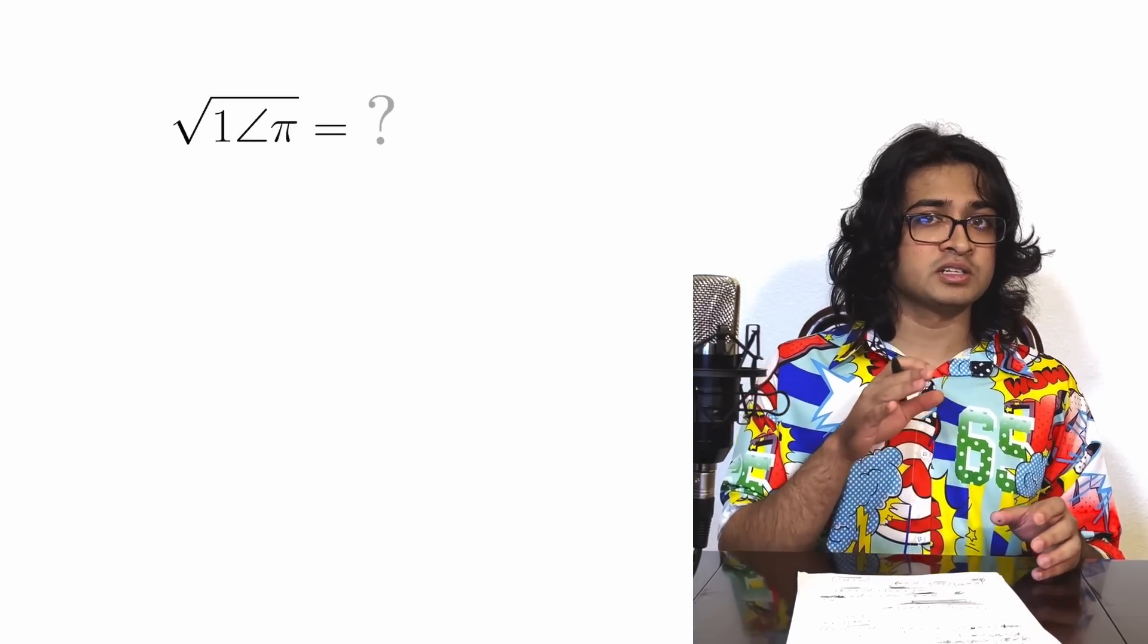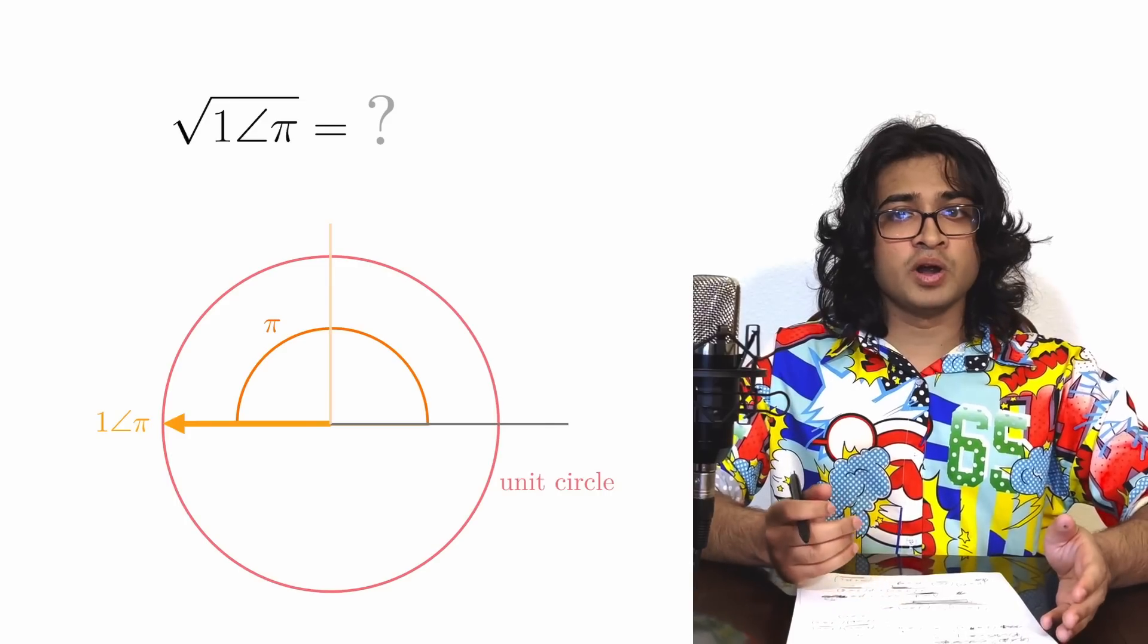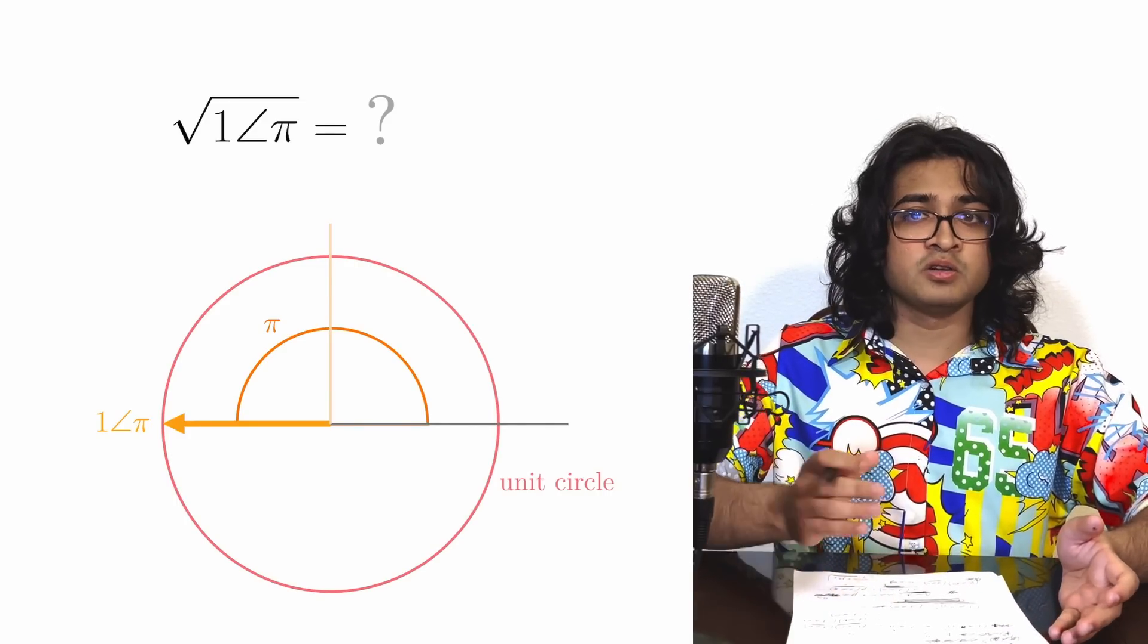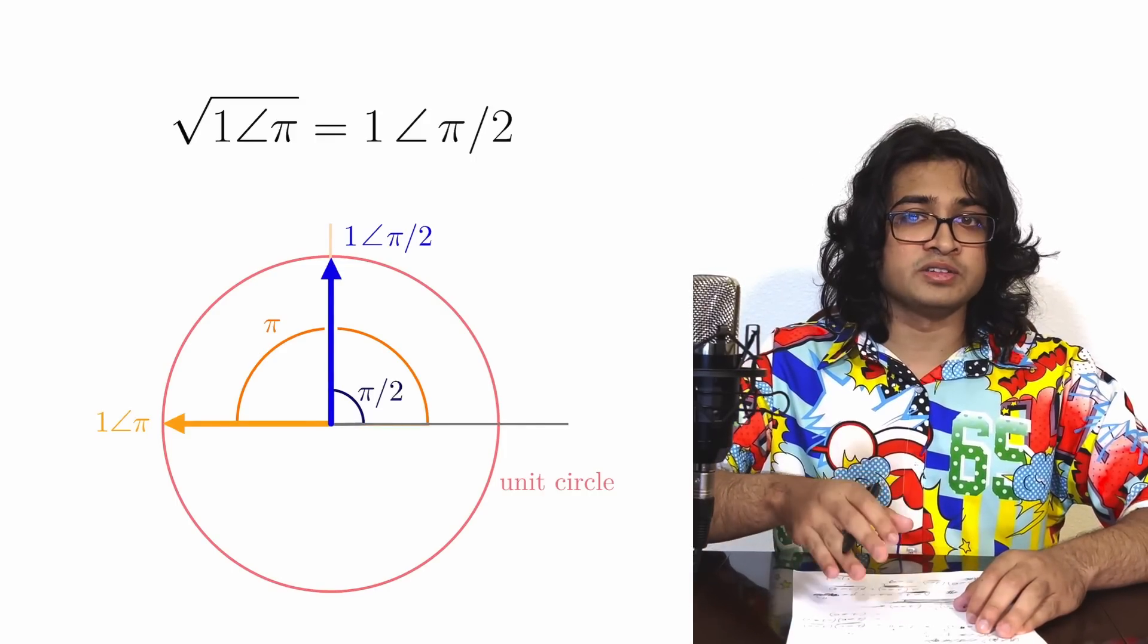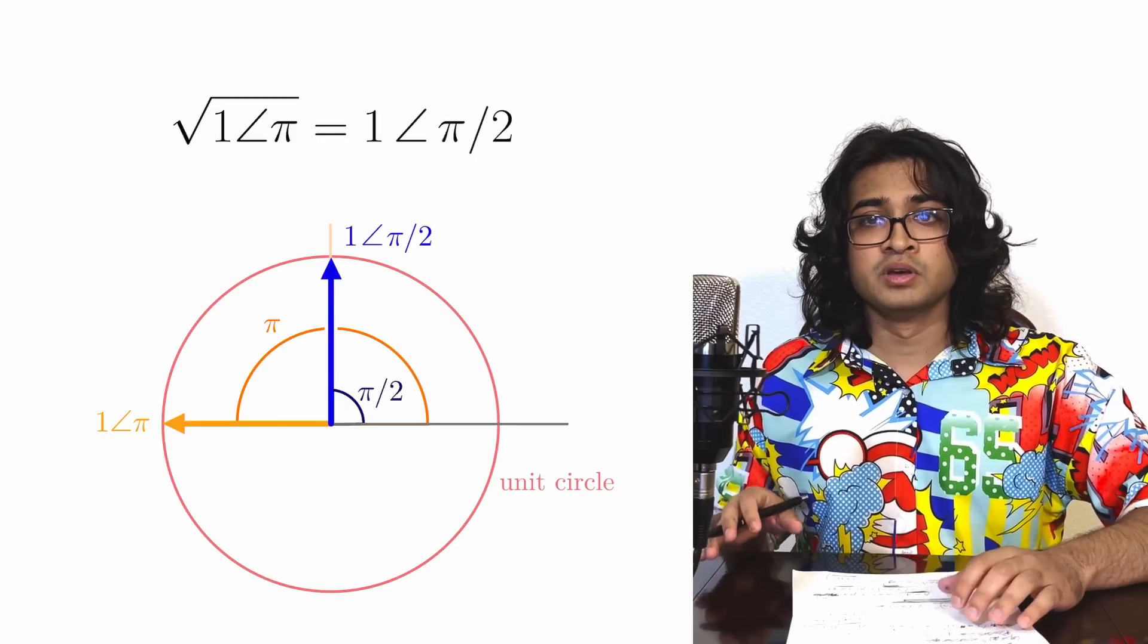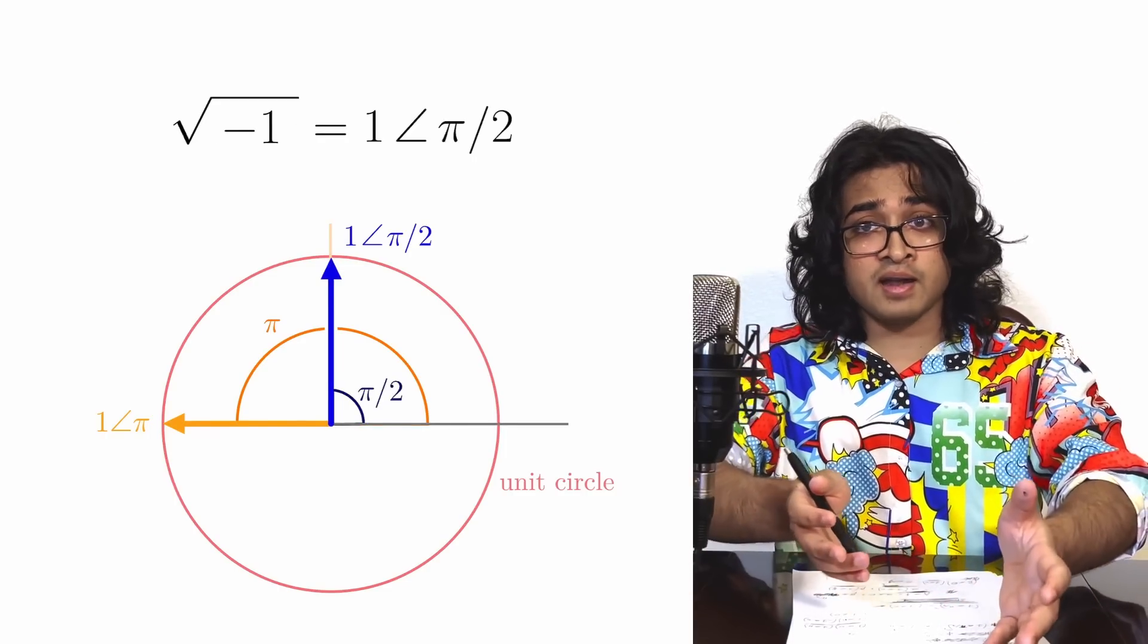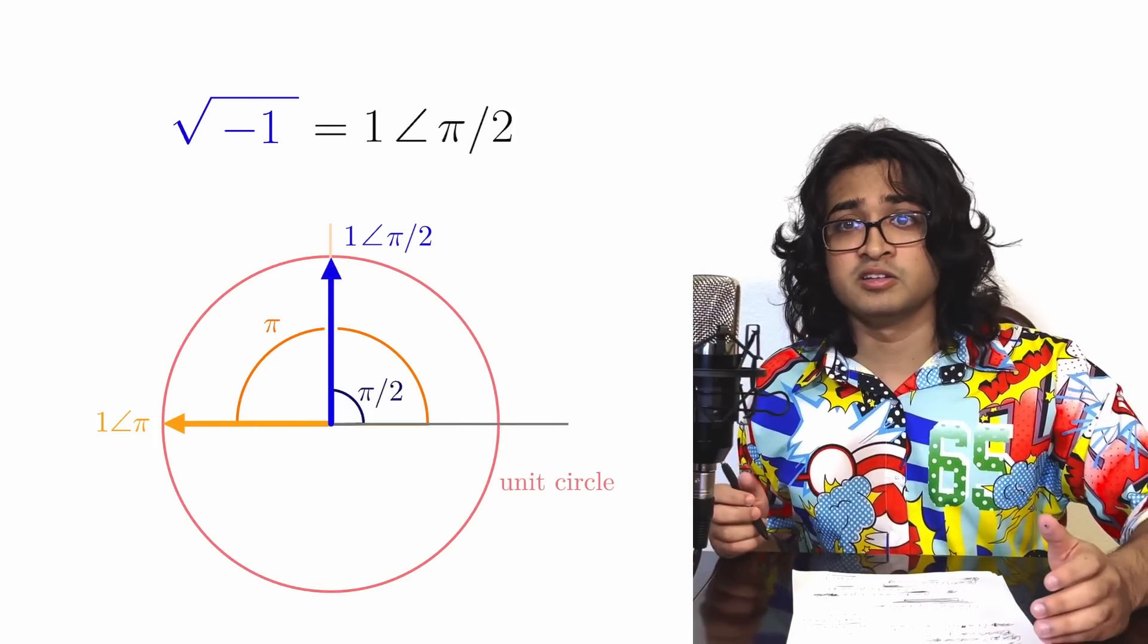Alright, at long last, it's time for the grand finale. Let's ask the question, what happens if you take the square root of the polar object one angle pi? Well, this corresponds to cutting the rotation angle in half. So the square root of the polar object one angle pi is the polar object one angle pi over 2. Well remember earlier that we said that one angle pi and negative 1 are the same object. So we'll substitute in negative 1 and hey would you look at that, we've discovered the square root of negative 1. Turns out it's just a 90 degree rotation.